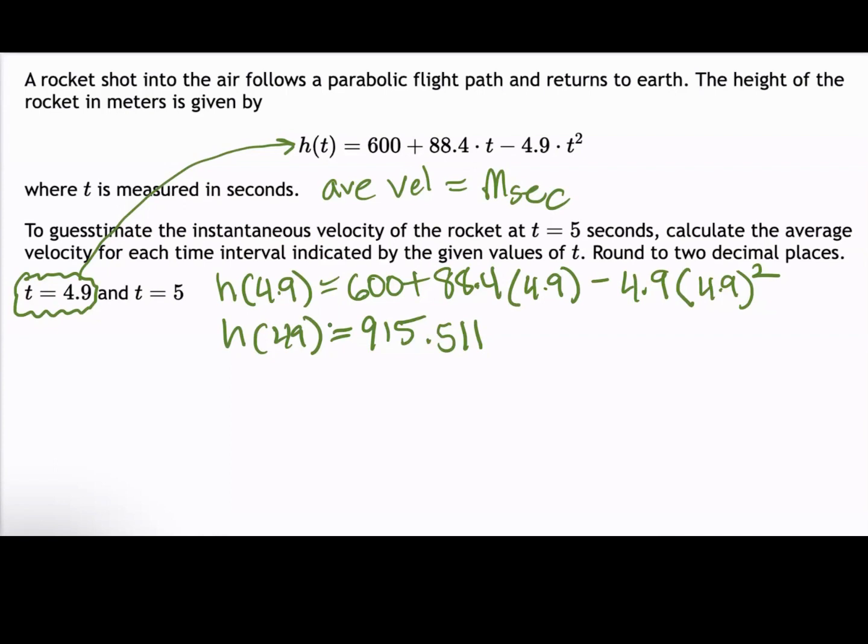And to avoid any roundoff error, we don't round until we're done finding the average velocity. So for our first point, we have an input value of 4.9 and an output value of 915.511.